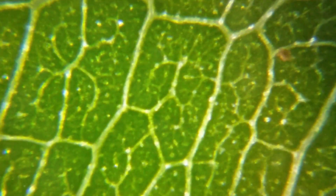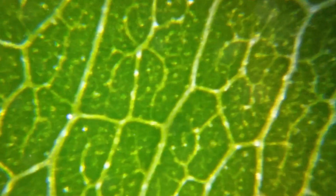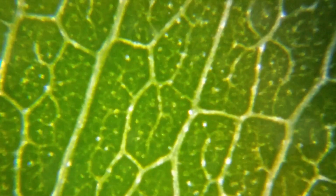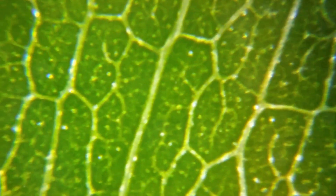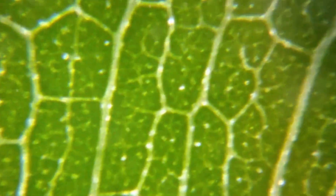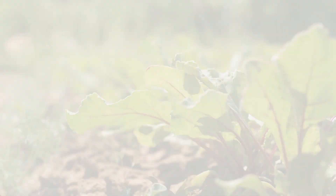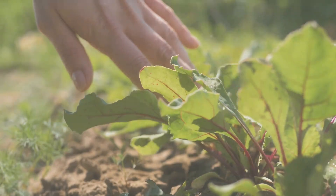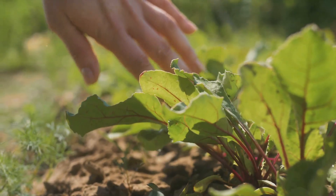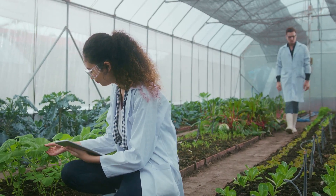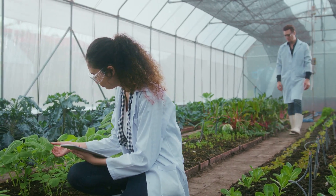Today, we will delve into the fascinating world of plant immunology and explore the key features of this remarkable defense strategy. Systemic acquired resistance is an enhanced defense mechanism that kicks into gear when a plant encounters certain pathogens or stress conditions.